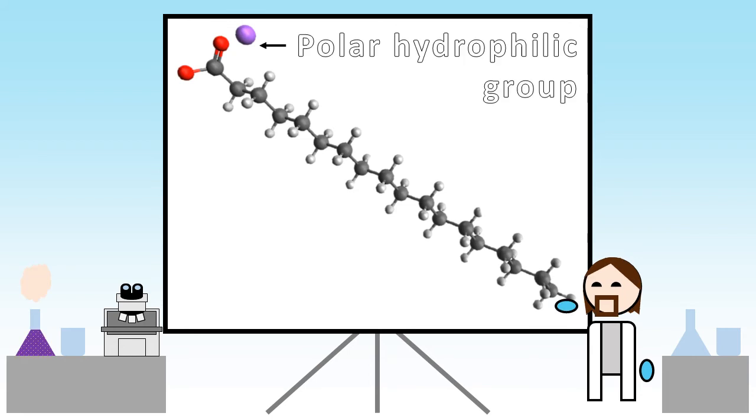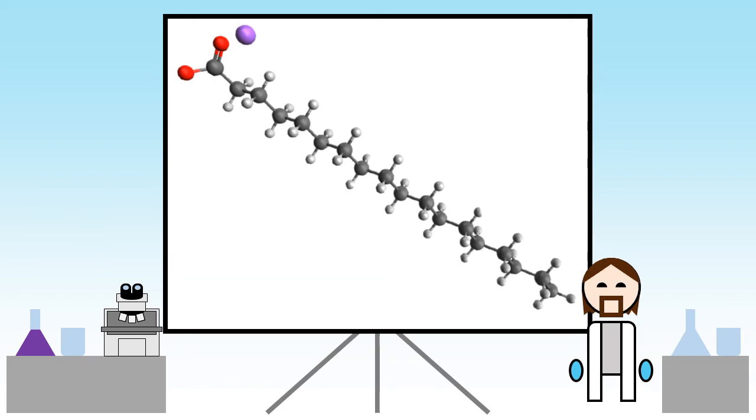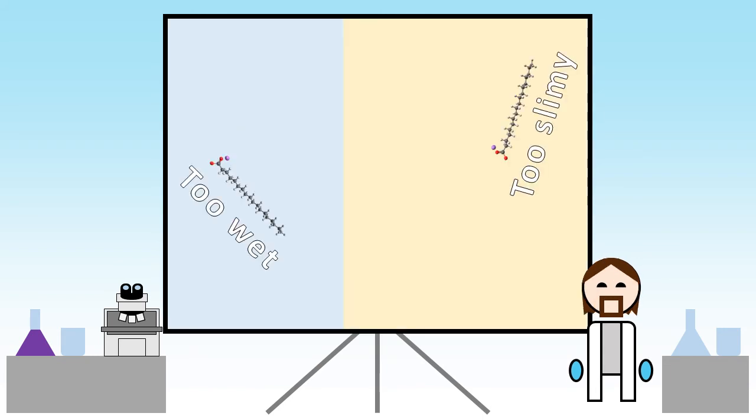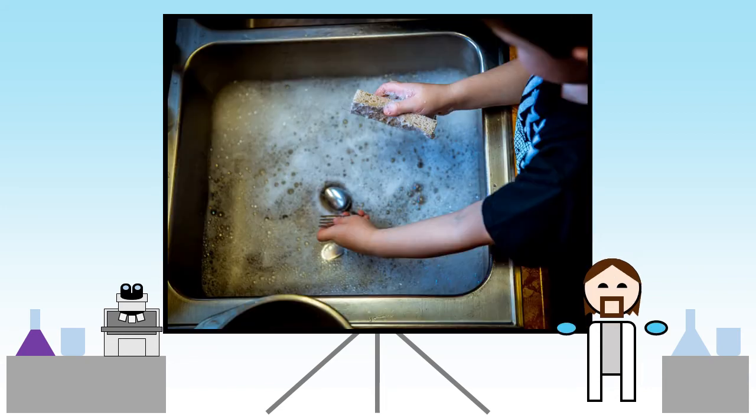Surfactants are molecules with areas that prefer to be in contact with different things. One end is similar to water and is called hydrophilic. The other end is more like oil and is called hydrophobic. Because of this dual nature, surfactants are also known as amphiphiles. When added to water and oil, these molecules are most happy at the interface. The hydrophobic end mixes with the oil and the hydrophilic end sits in the water. This lowers the interfacial tension, and that's why we wash things up using soap.